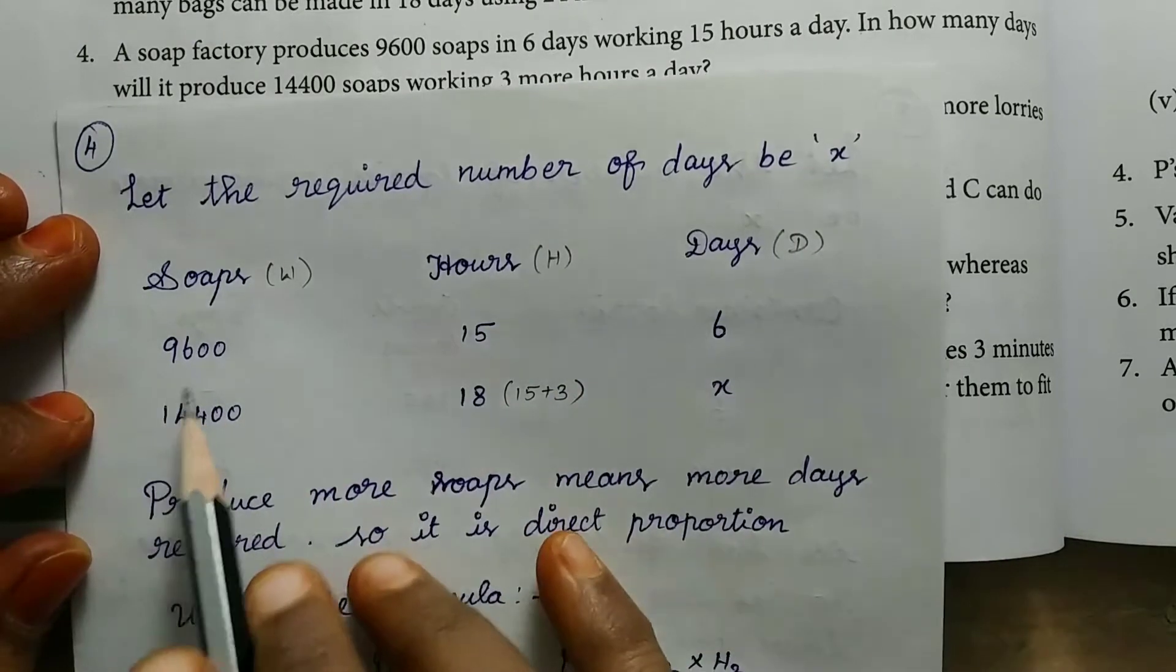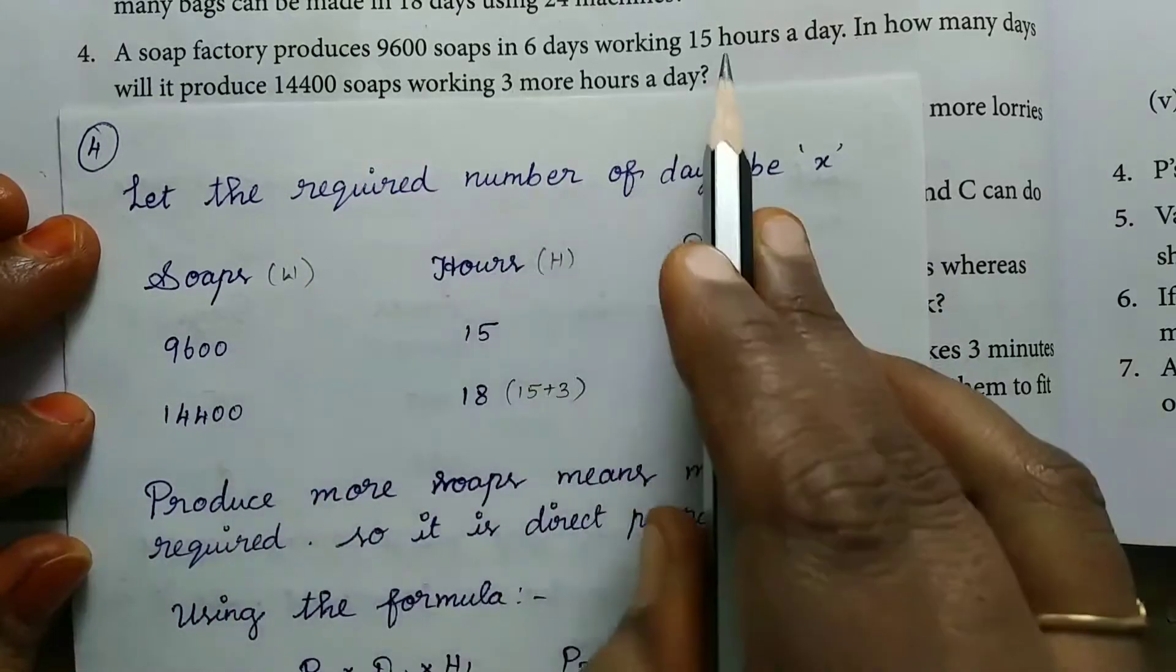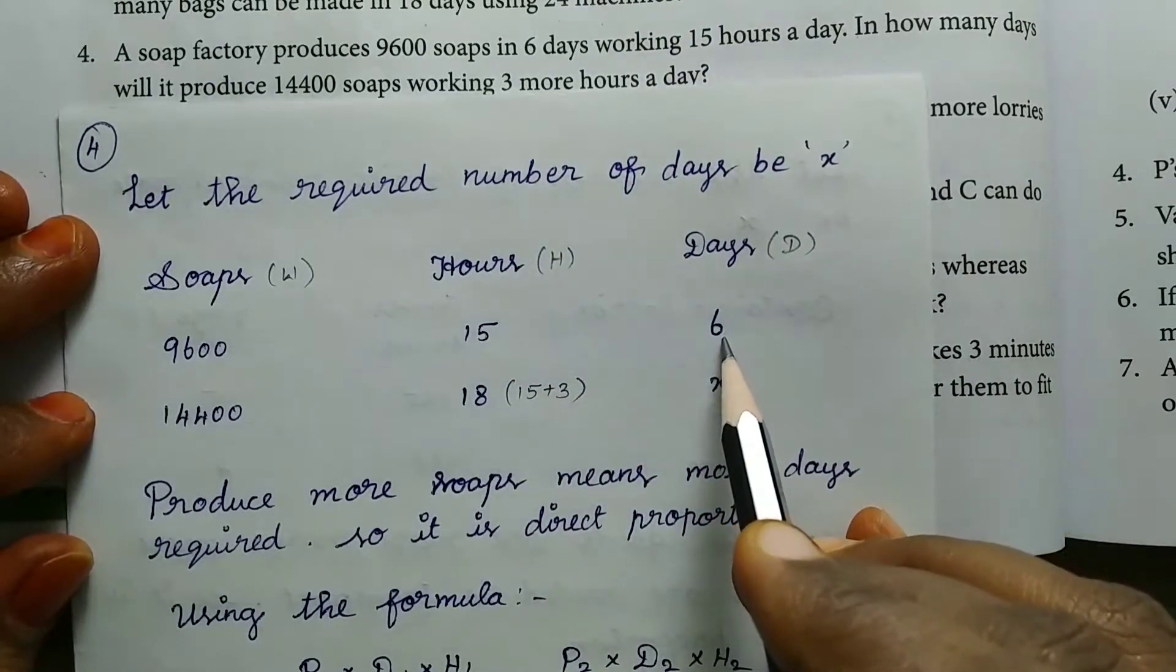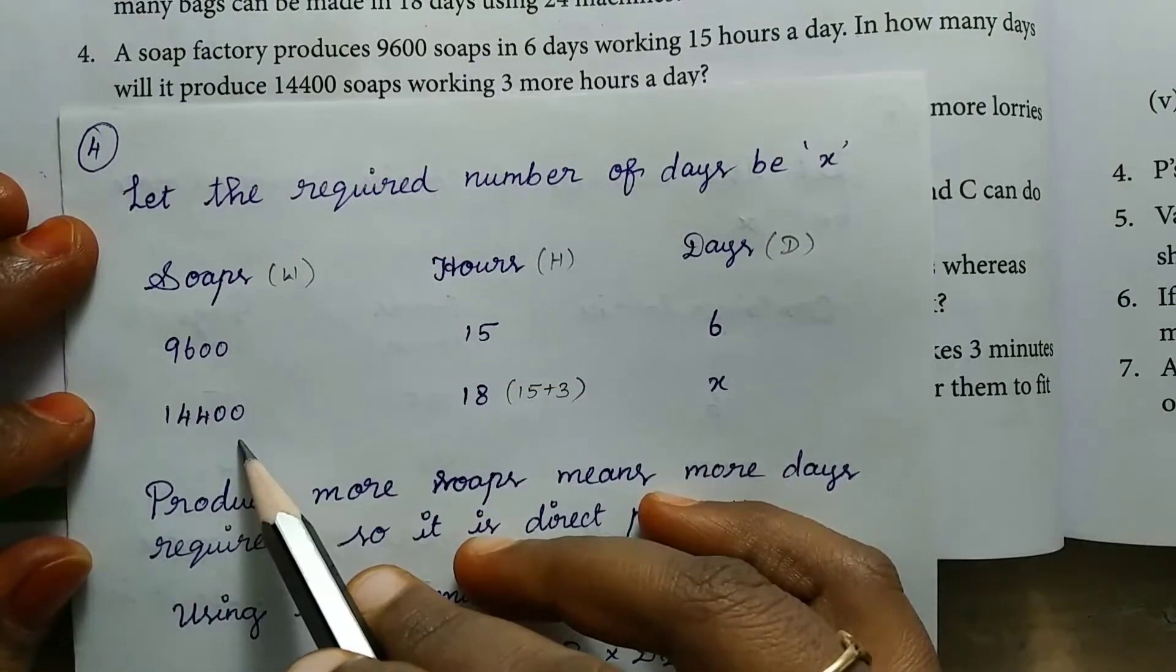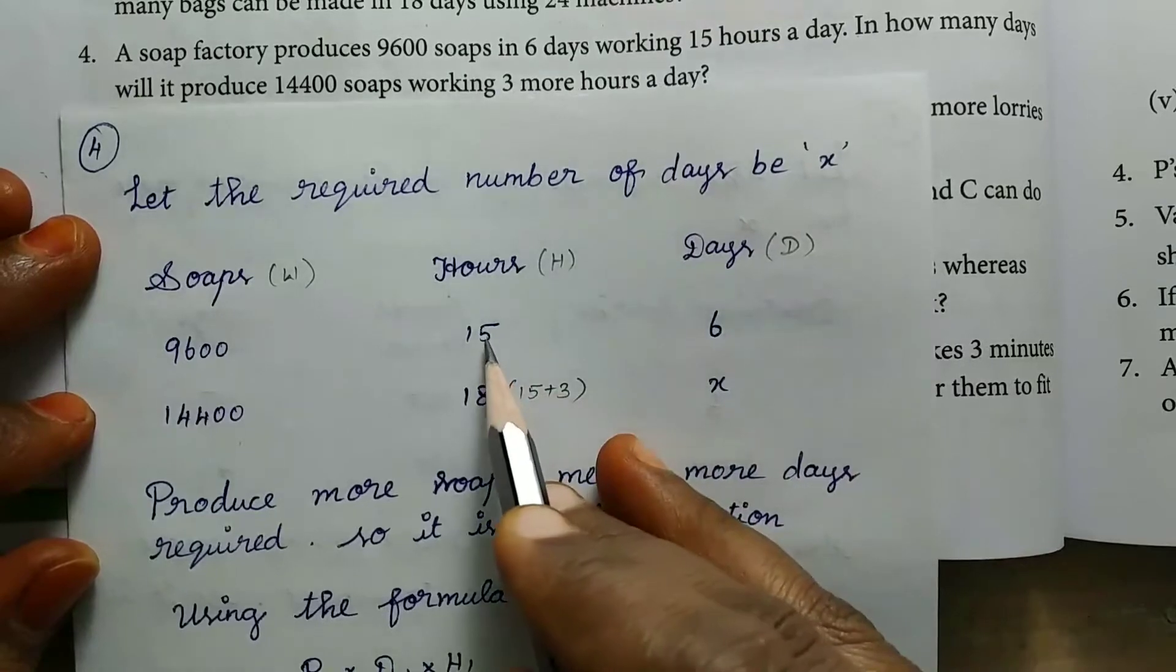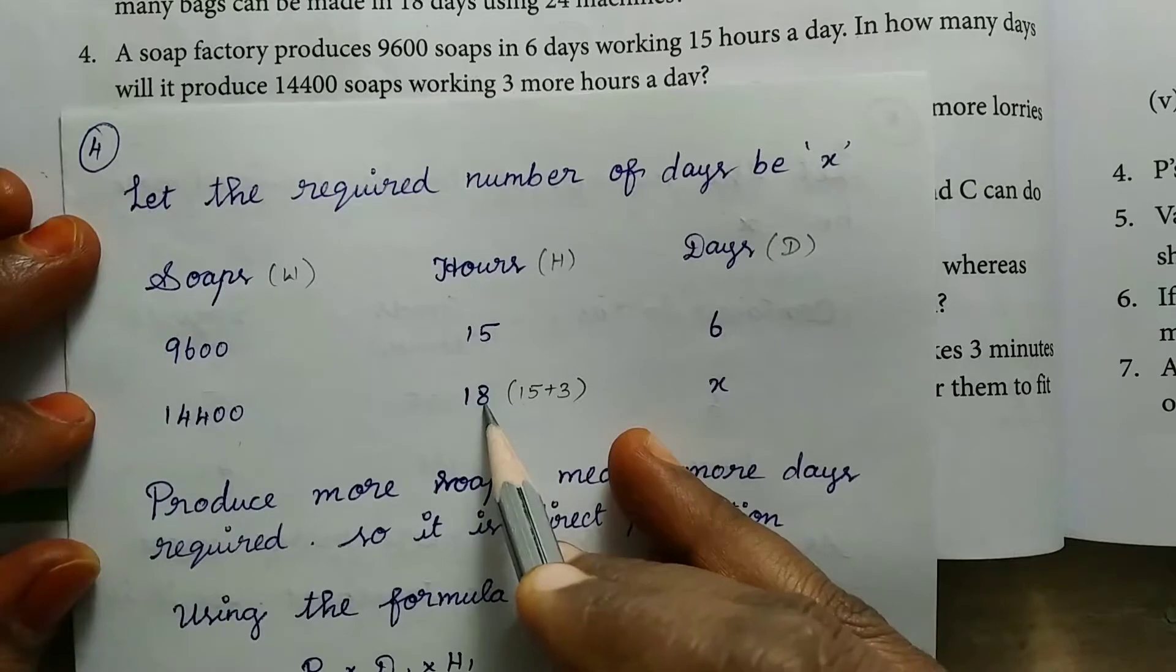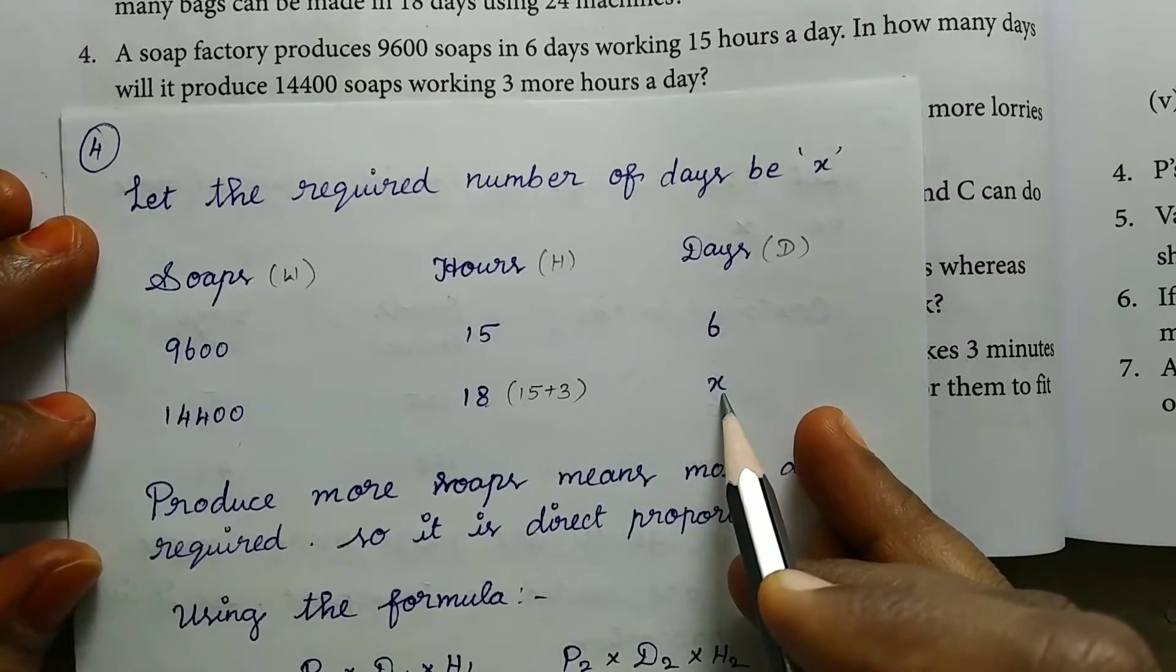So now we are going to fill the values. 9600 soaps, 15 hours worked on 6 days. Then 14400 soaps manufacturing, more 3 hours a day. Already worked 15 hours, more 3 hours, 15 plus 3 is 18 hours worked on. So number of days to find, that is our X.